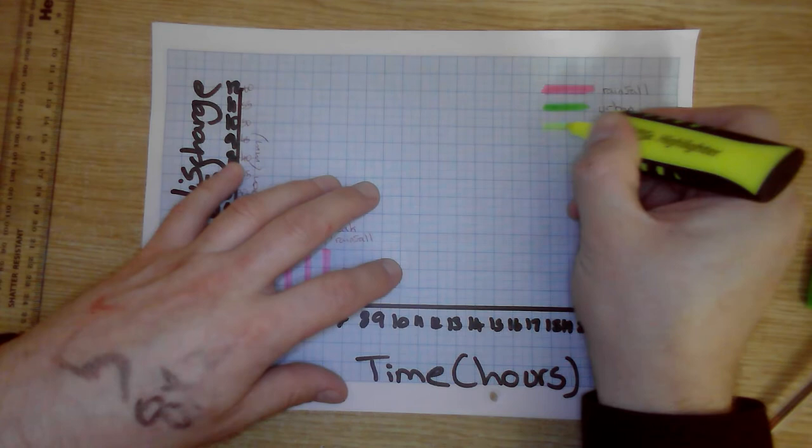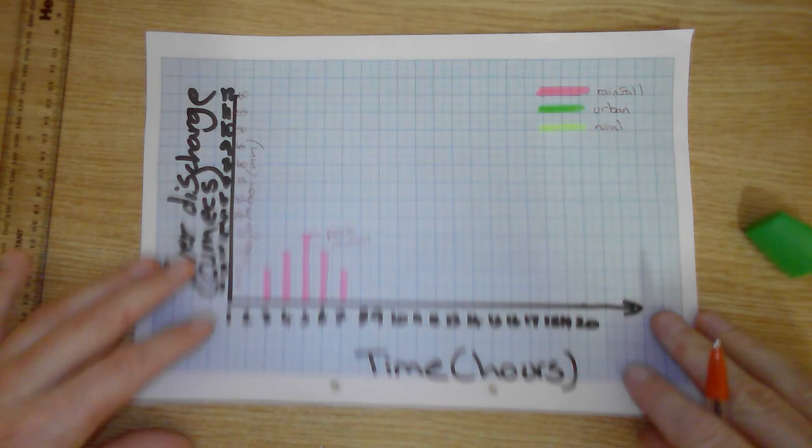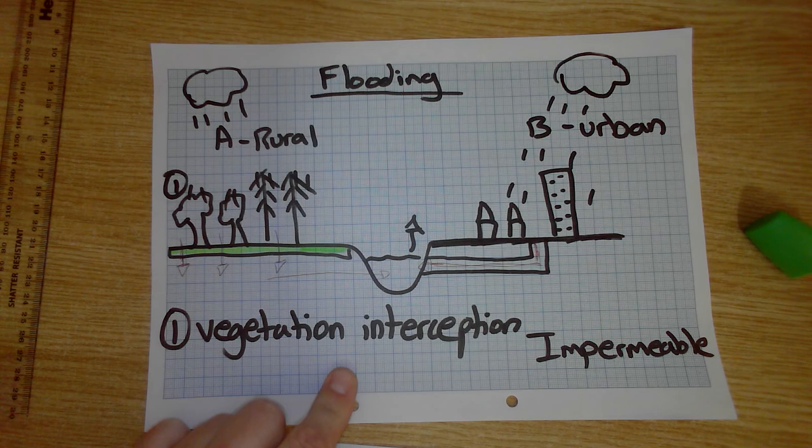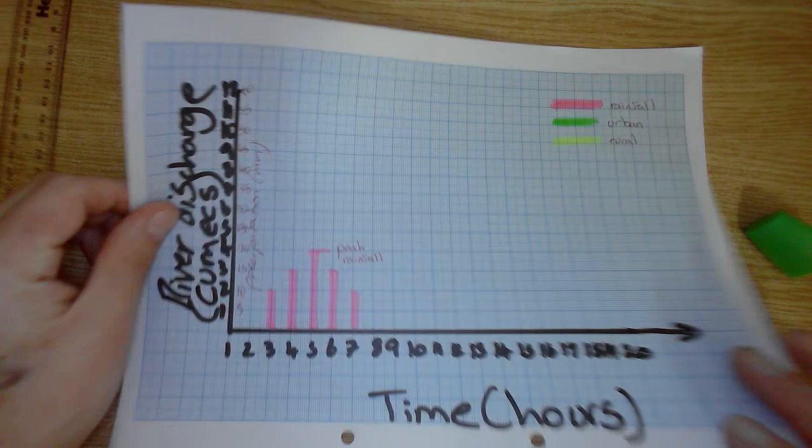And, if we flip back again, rural. The precipitation has to hit the trees. Vegetation interception. Takes a long time to infiltrate. And, through flow takes it to the river eventually, a long time later.